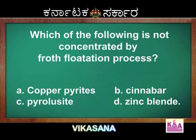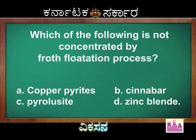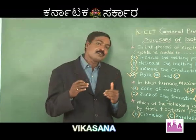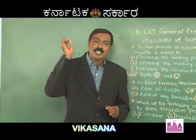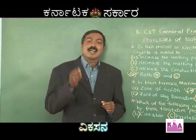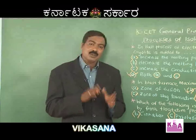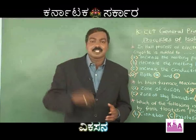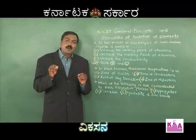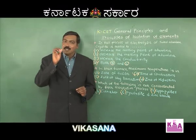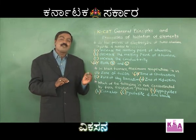Which of the following is not concentrated by the froth flotation process? The froth flotation process is a methodology of ore concentration, employed depending on the nature of the impurity. Gravity separation and hydraulic washing are used when impurities are lighter in nature. Froth flotation process is employed specifically for sulfide ores.